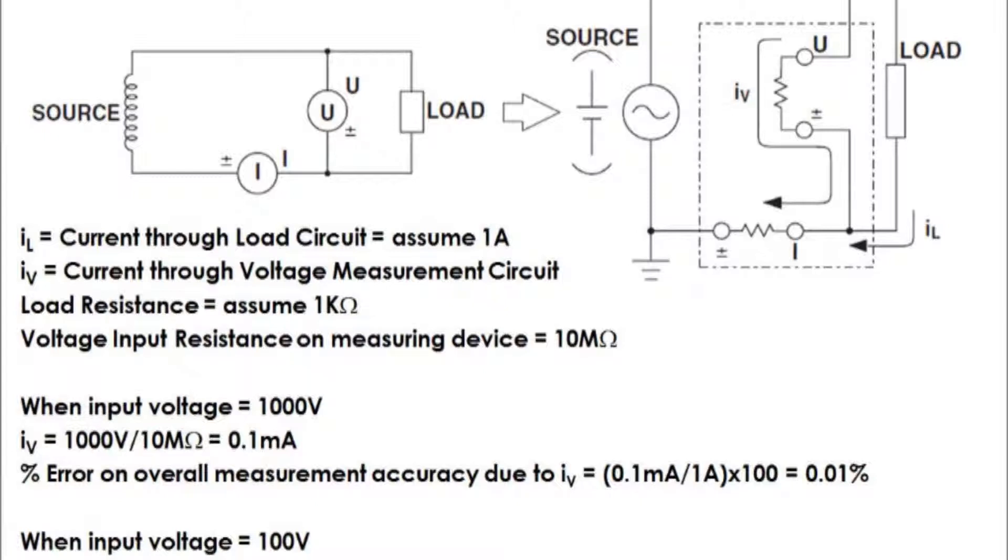When measuring current that is relatively large, wire such that the voltage measurement circuit is connected to the load side. Let's consider the following current source and load resistance circuit below.